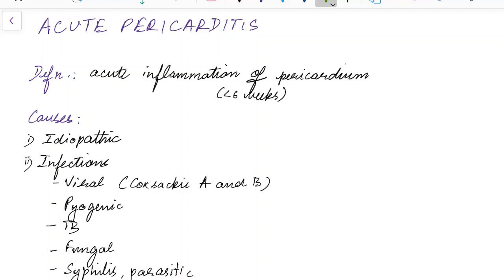Hello guys, this is Indian Medico. In this video we are going to see about acute pericarditis. What is the definition of acute pericarditis? Acute pericarditis is the acute inflammation of pericardium. It usually develops within six weeks.